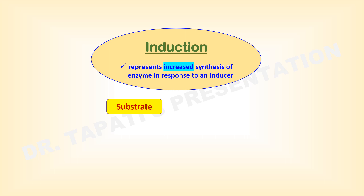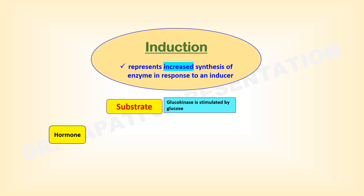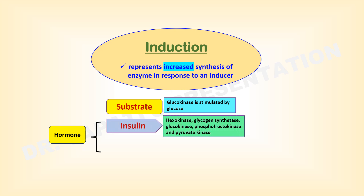The presence of a substrate can induce enzyme synthesis, resulting in a substantial increase in enzyme concentration. For example, glucokinase is stimulated by glucose, which is the substrate of this enzyme in the glycolysis pathway. Hormones are also known to increase enzyme synthesis; the hormone insulin induces the synthesis of glycogen synthetase, glucokinase, phosphofructokinase, and pyruvate kinase.